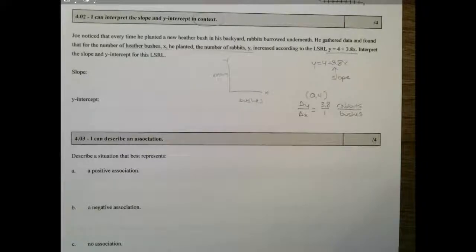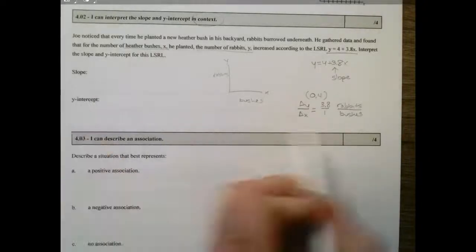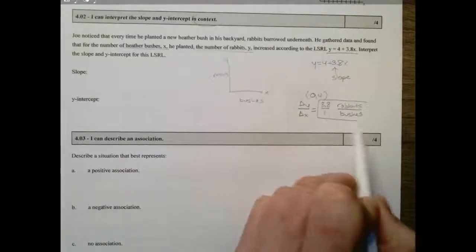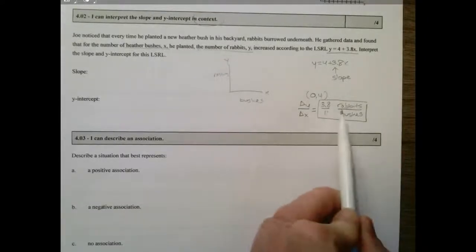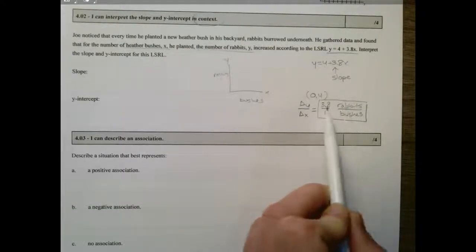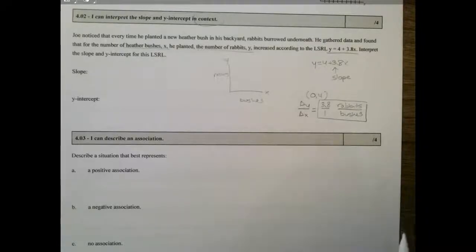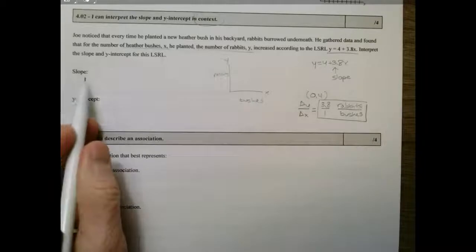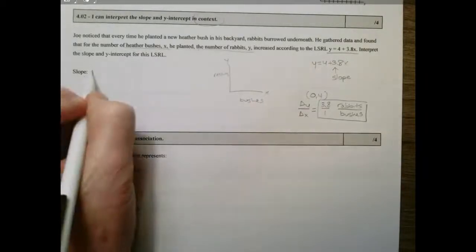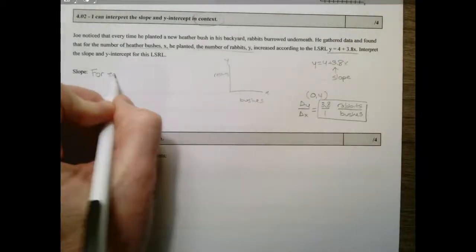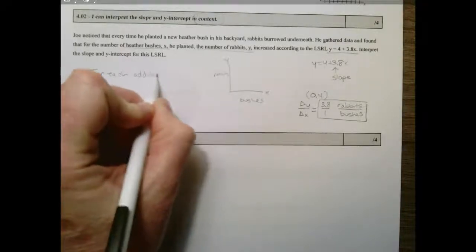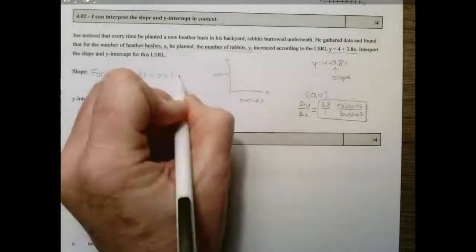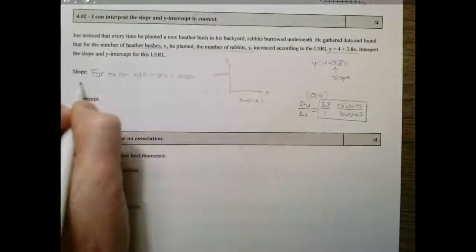So we're going to interpret the slope and the y-intercept for this least squares regression line. The slope is: there's an increase in rabbits of 3.8 for every bush that gets planted, for every one bush that gets planted. So the slope is telling me, for each additional bush planted, there is an increase of 3.8 rabbits.